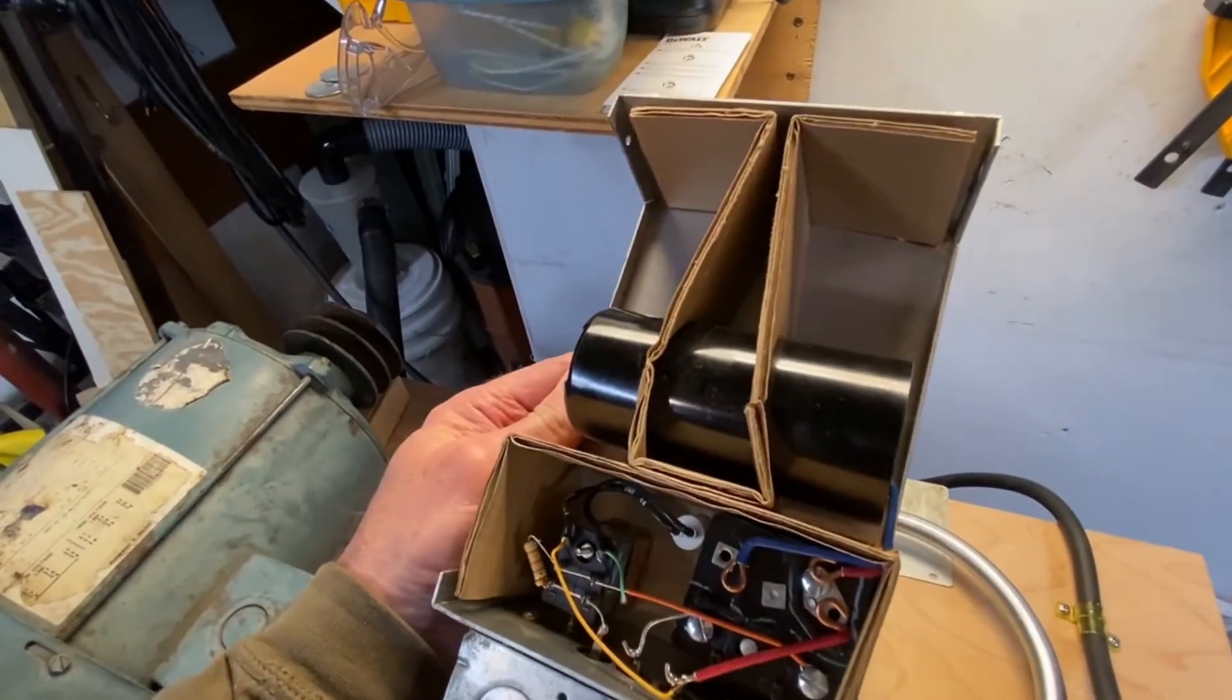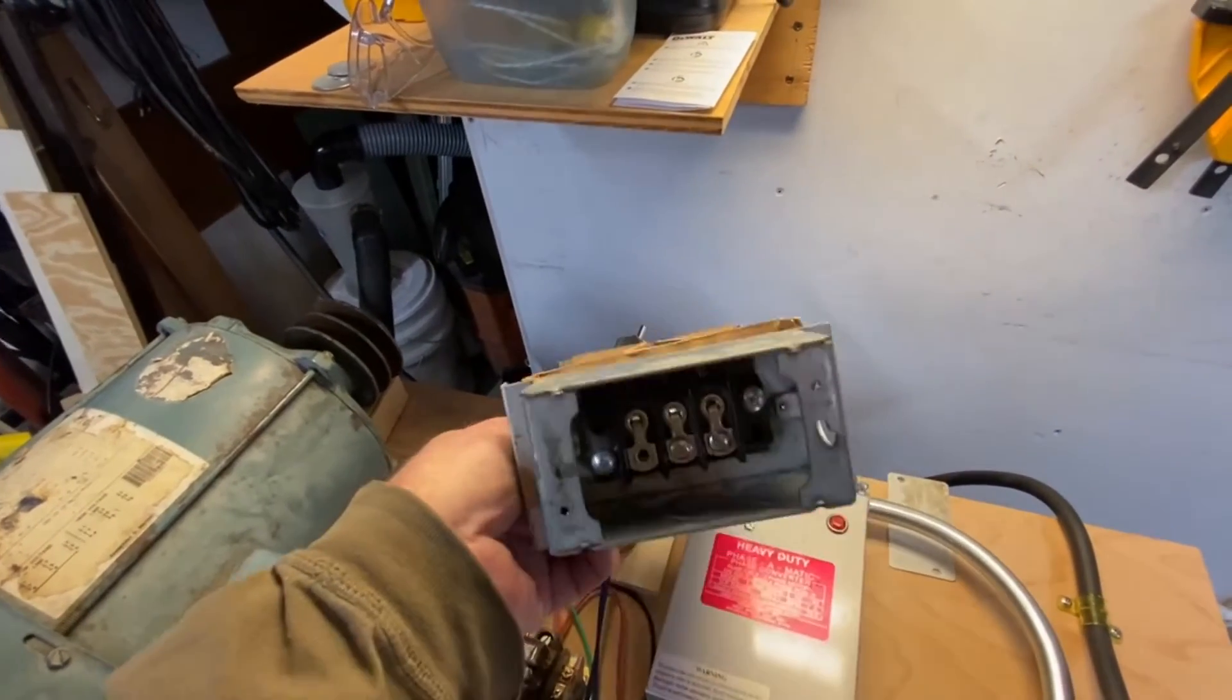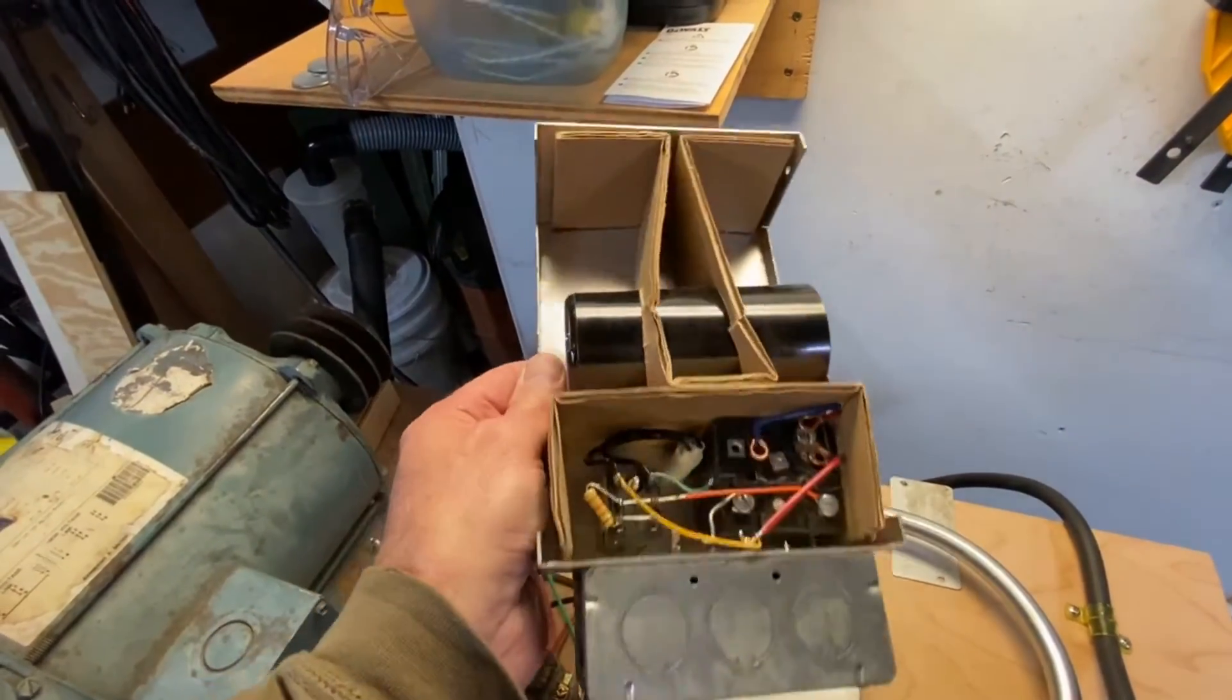A three-phase motor needs all three phases to know which direction it's supposed to spin. So this box generates that third phase. How does it do that?